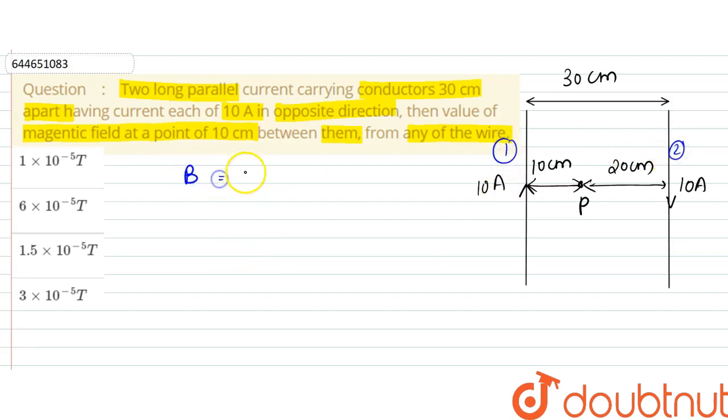Due to wires, the magnetic field is equal to mu naught i by 2 pi d. So we can write that the magnetic field due to first wire would be equal to mu naught, that is 4 pi into 10 to the power minus 7.